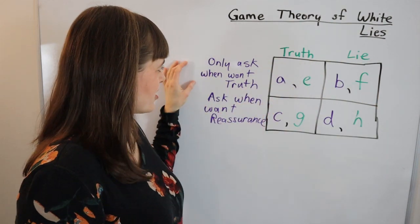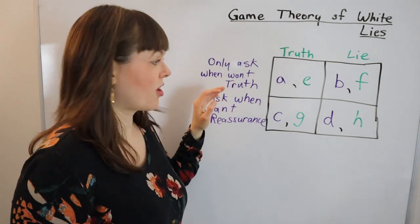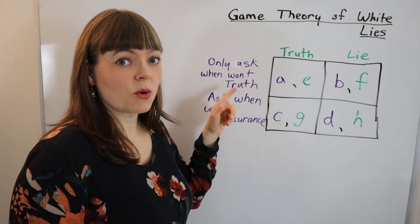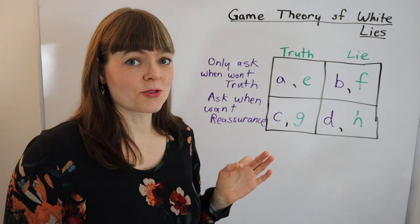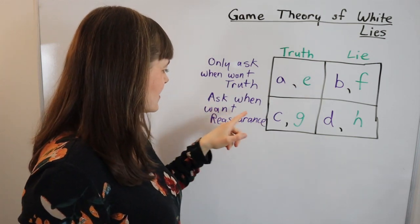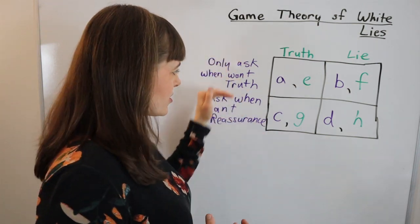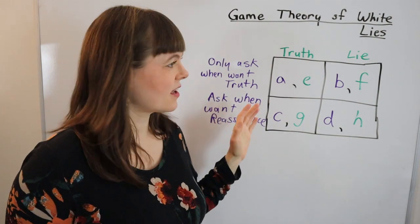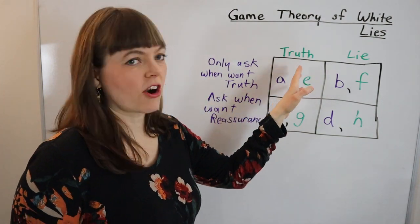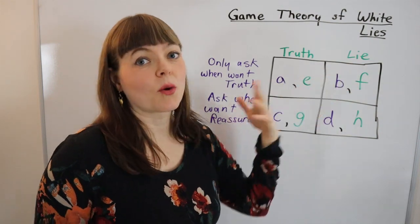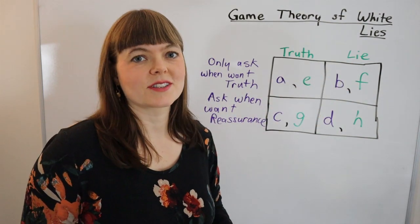And so the two strategies of the players: the girlfriend has the strategies 'only ask when you actually want the truth' and 'ask when you also want reassurance.' His strategies are tell the truth or tell a white lie. Those are the situations.